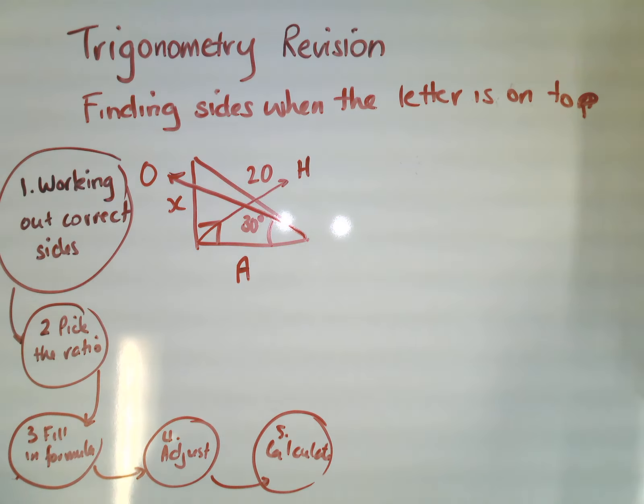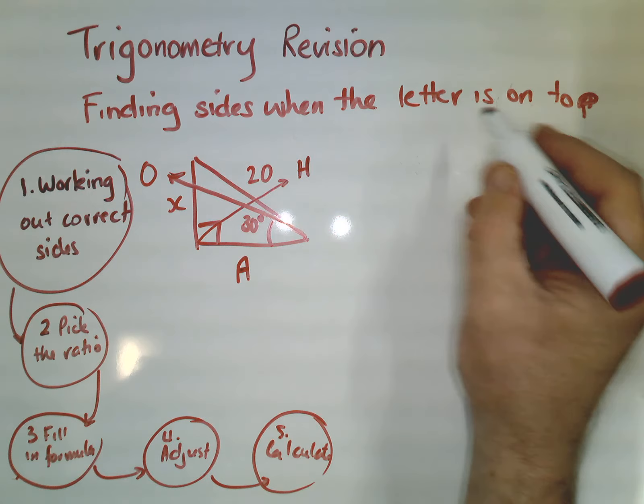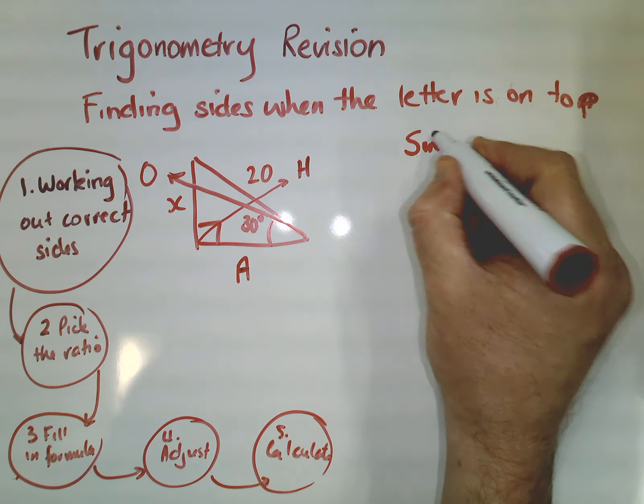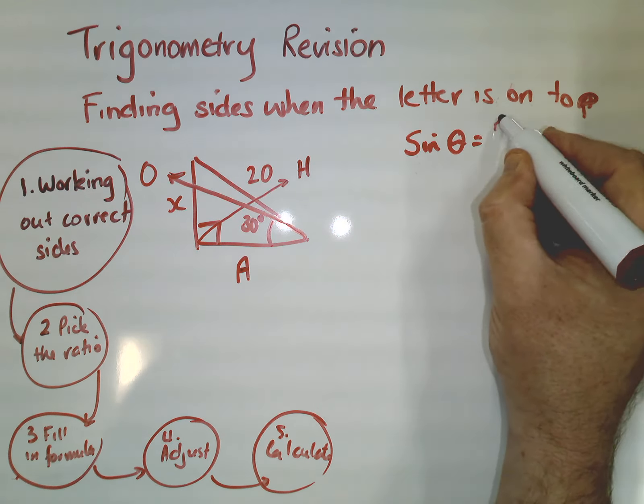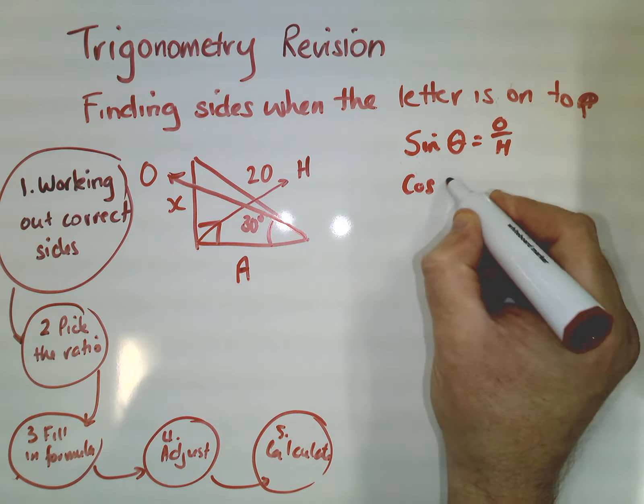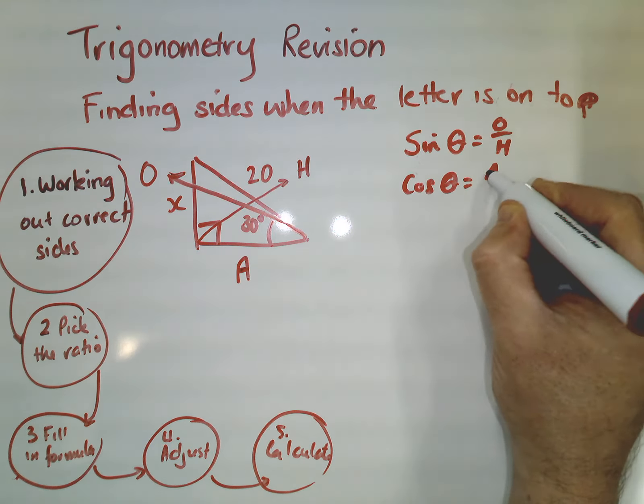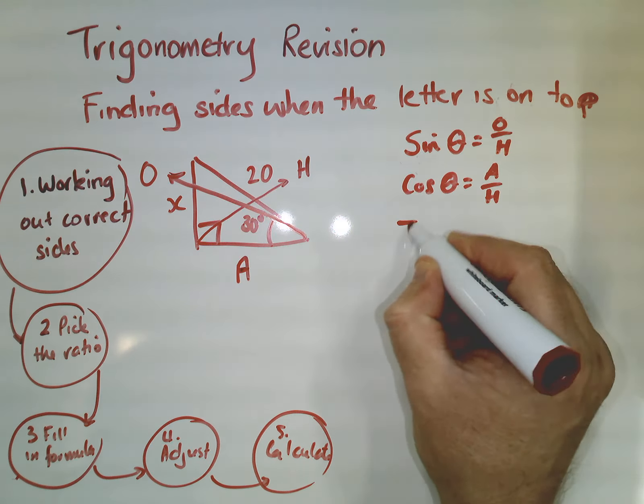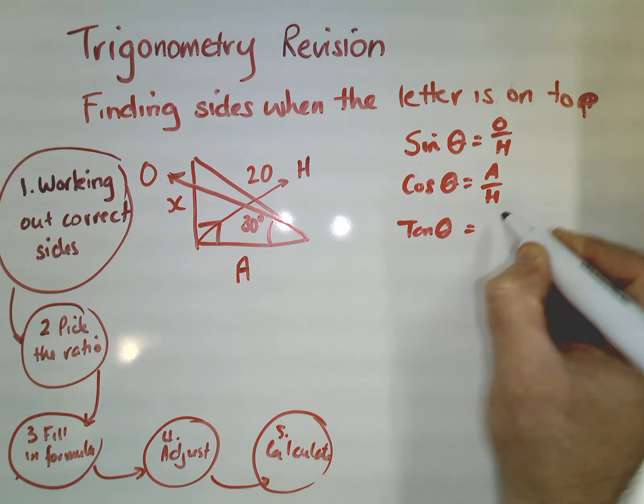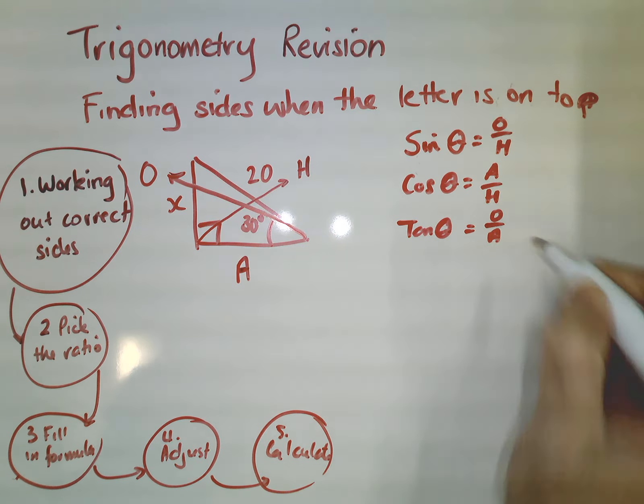And the second one is we've got to pick which ratio we're going to use. Now remembering that sine of our angle is opposite over hypotenuse, cos of our angle is adjacent over the hypotenuse, and tan of our angle is of course opposite over adjacent.